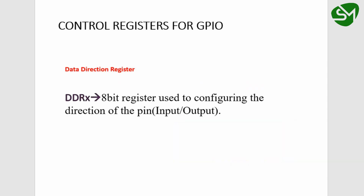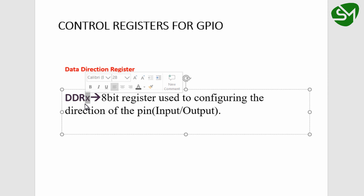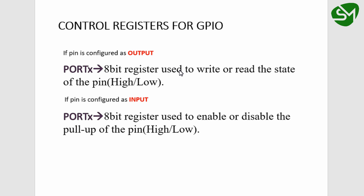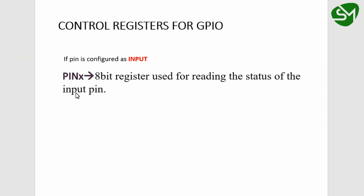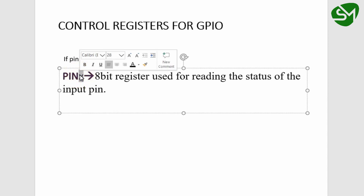In conclusion: for configuring a pin as input or output, we use the DDRX register — DDRA, DDRB, DDRC, or DDRD depending on the port. The PORTX register is used for setting or clearing bits when the pin is configured as output, and for enabling or disabling pull-ups when the pin is configured as input — PORTA, PORTB, PORTC, or PORTD. The PINX register is used only for reading the status of an input pin — PINA, PINB, PINC, or PIND depending on the port.